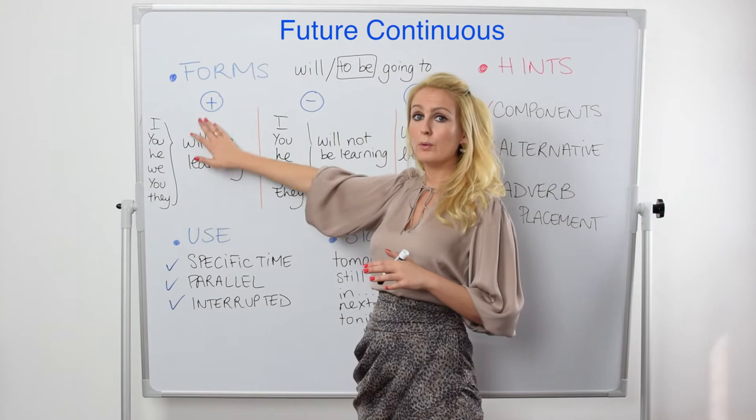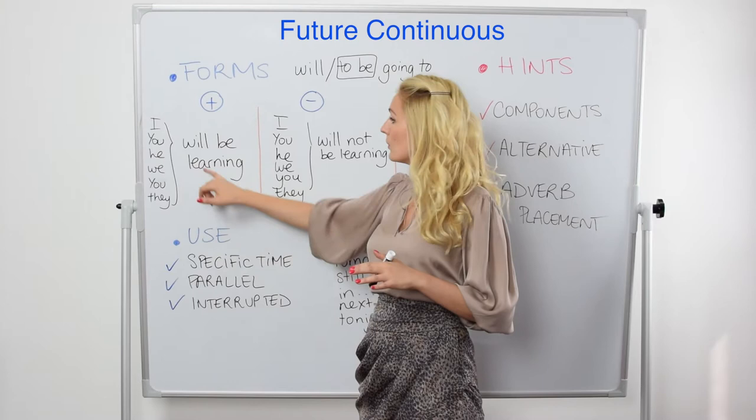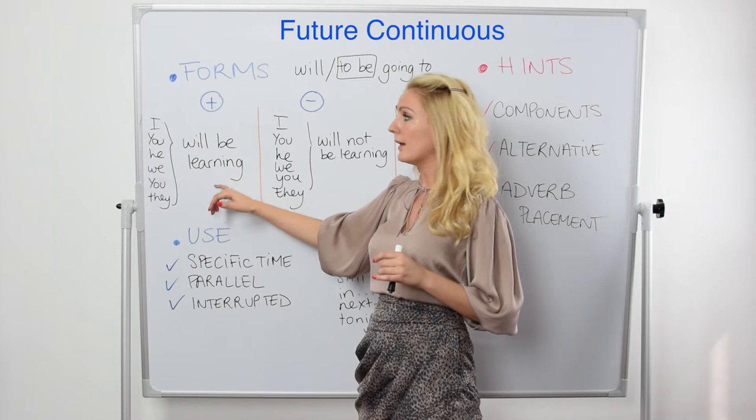If we go with 'will,' it's one form for all the different subjects. So: I will be learning, you will be learning, and so on. You can also have a contracted form with apostrophe double-L: I'll be learning, you'll be learning, and so on.